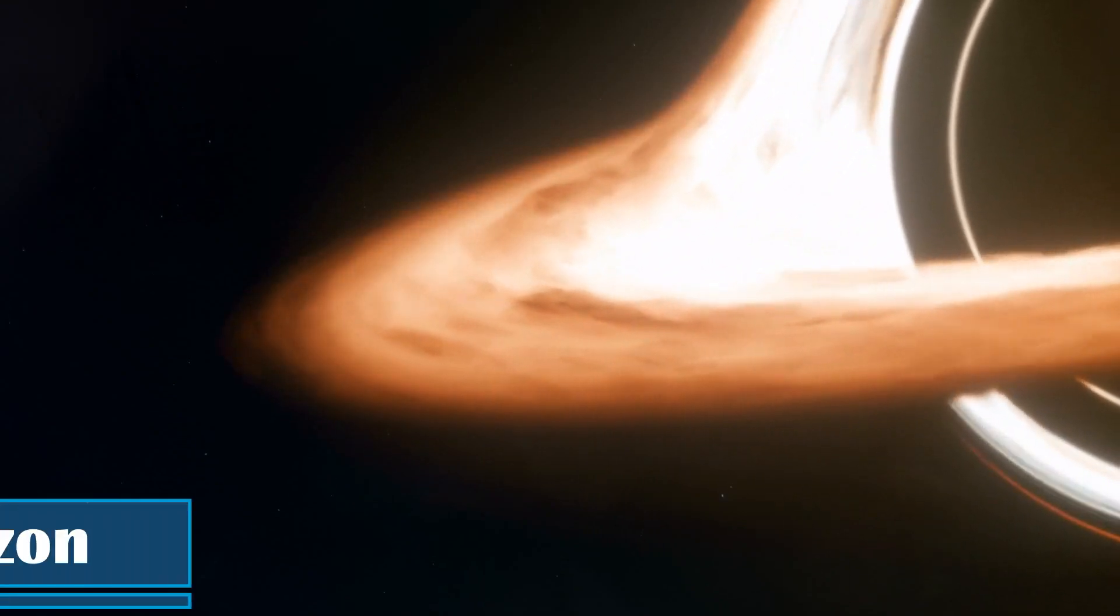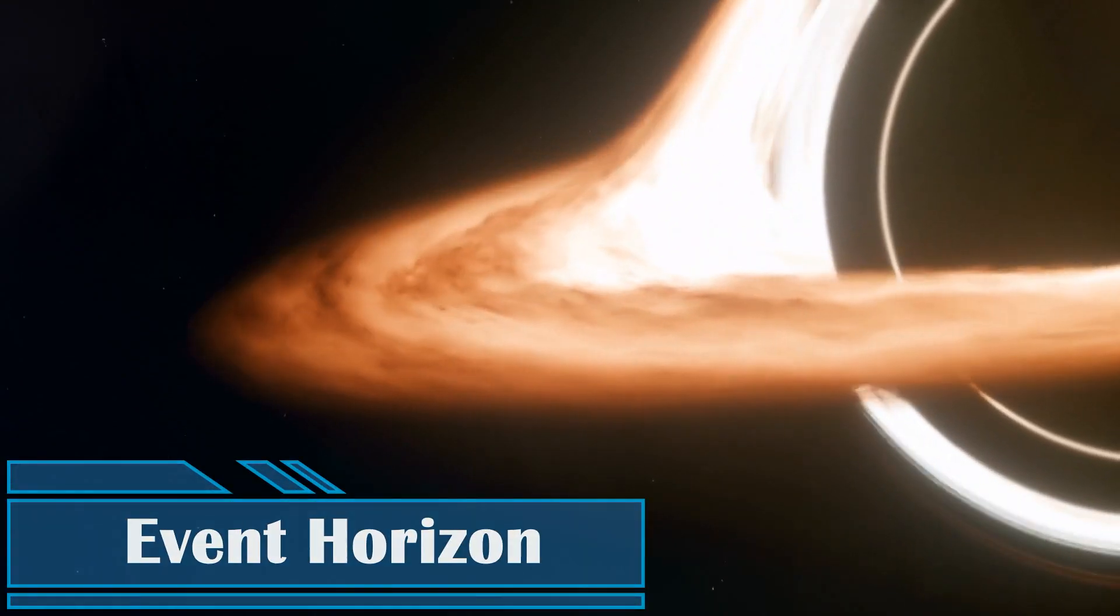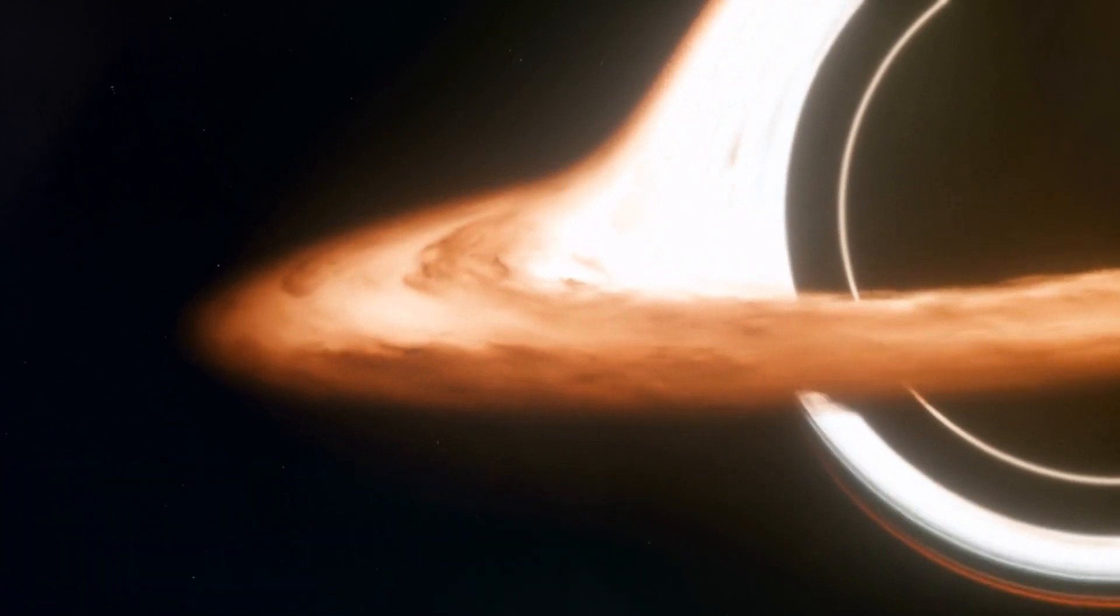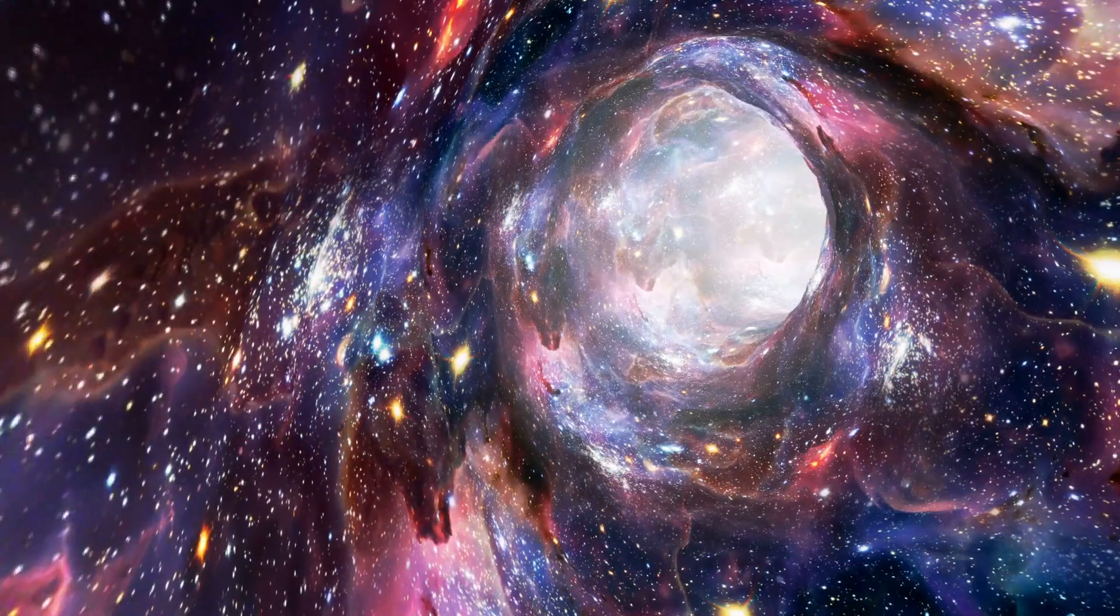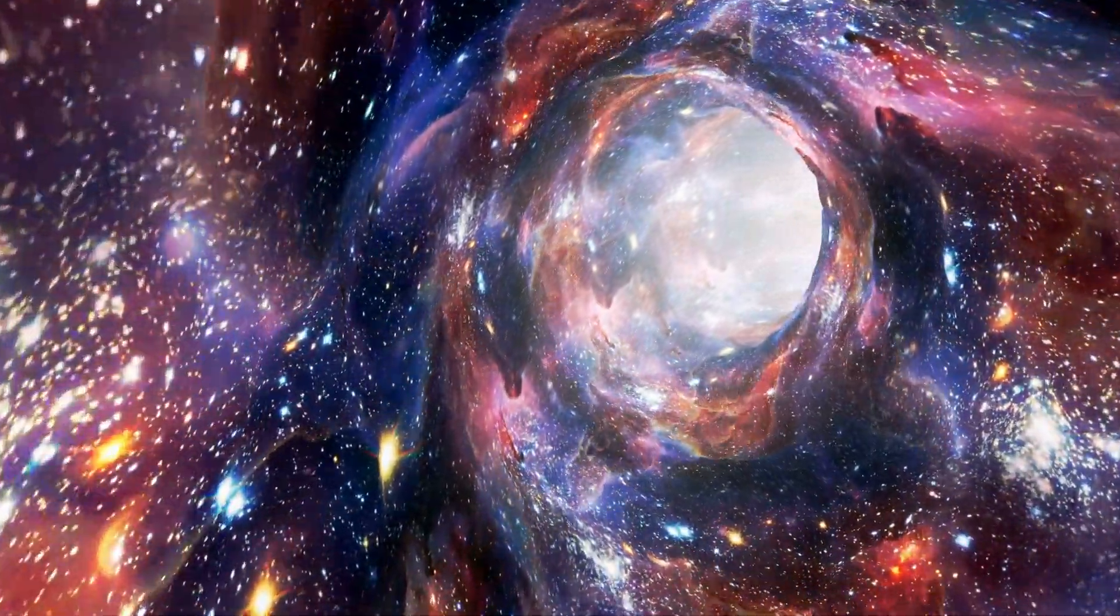Event Horizon: The event horizon is the point of no return around a black hole. Once anything crosses this boundary, including light, it is forever trapped within the black hole's gravitational grasp.